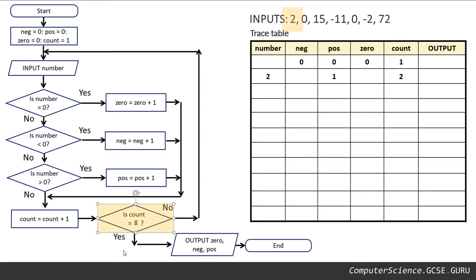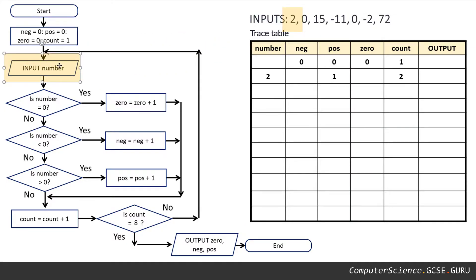We come to another decision: is count equal to eight? No, count is equal to two. So we follow the no line through and we're back to our input. We move along.